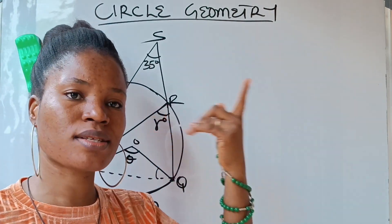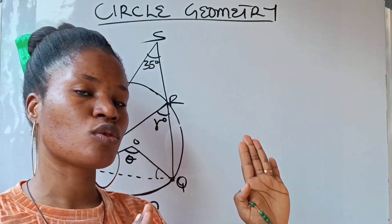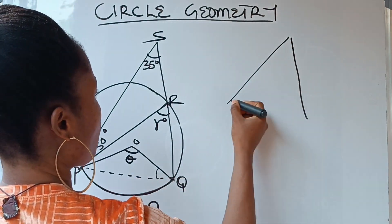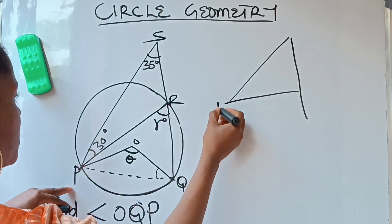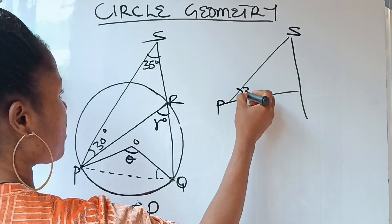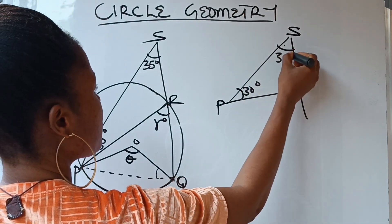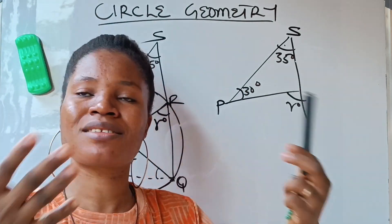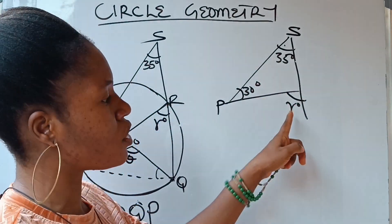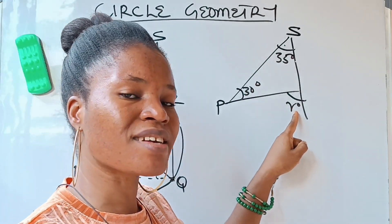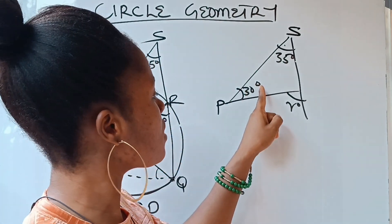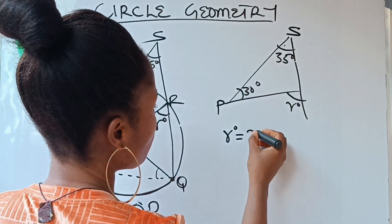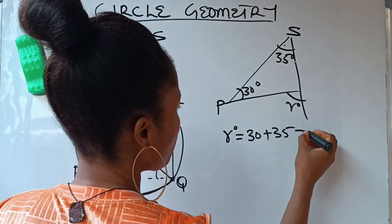This is the question from today's live session. We have point P and point S, with 30 degrees and 35 degrees given. Our r is what we are looking for. The theorem states that when you add these two angles together they give you r — the exterior angle of a triangle equals the sum of the two opposite interior angles. So r equals 30 plus 35, which gives us 65 degrees.